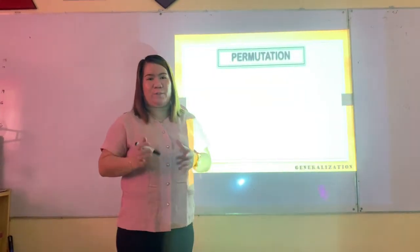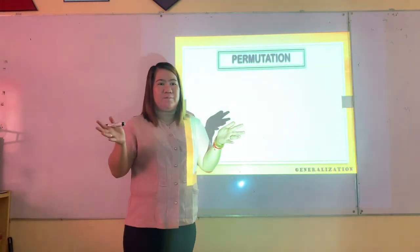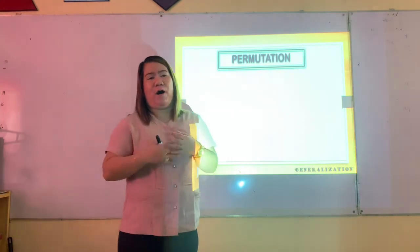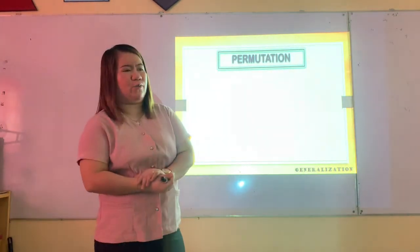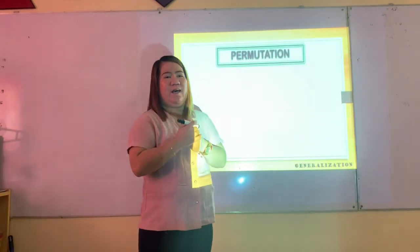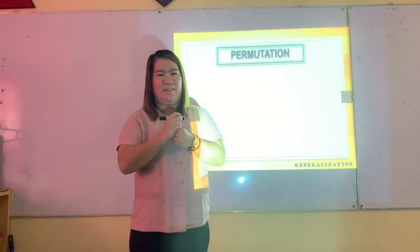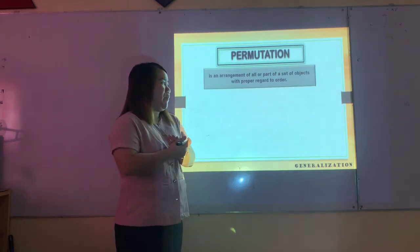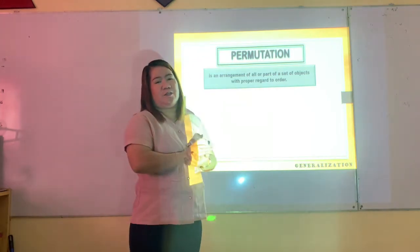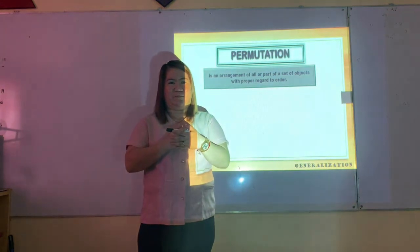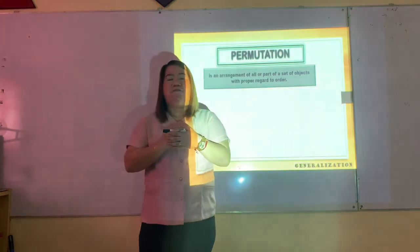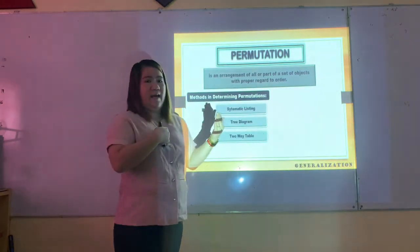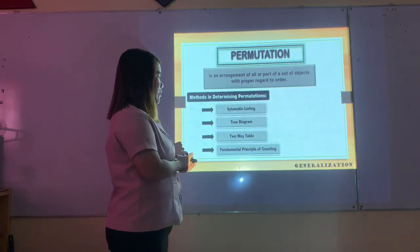We're done with our examples on permutation. Any questions? It seems clear to everyone. Let's sum up our lesson. Permutation is an arrangement of all or part of a set of objects with proper regard to order. The four methods in determining permutations are: systematic listing, tree diagrams, two-way tables, and the fundamental principle of counting.